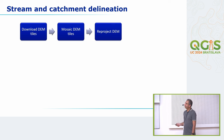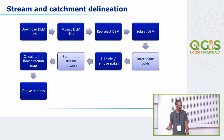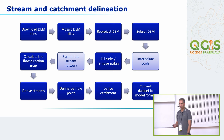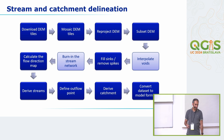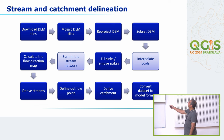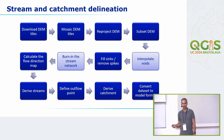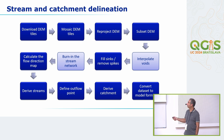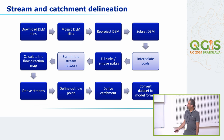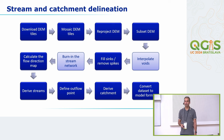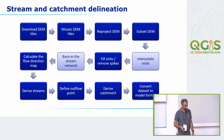This is what hydrologists generally need to do with GIS to derive streams and catchments. You need a DEM, you need to do some processing. You need to fill sinks and remove spikes to make it hydrologically correct so the water will flow to an outlet. You need to calculate the flow direction, derive the streams, define the outlet for which you want the catchment, and then convert it to your model or other tool.